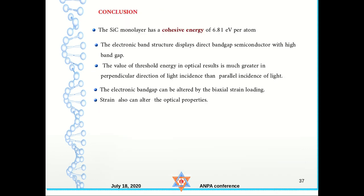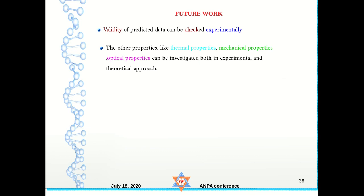In conclusion, the monolayer silicon carbide is very stable with a good cohesive energy, and the electronic band structure displays a direct band gap semiconductor with a high band gap value. The threshold energy in optical results is much greater in the perpendicular direction than in the parallel direction. The electronic band gap can be easily altered by strain loading, and strain can also alter various other optical parameters. Future work includes experimental verification and exploration of other properties using different theoretical approaches.